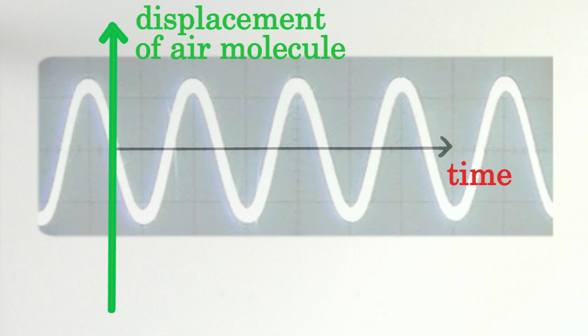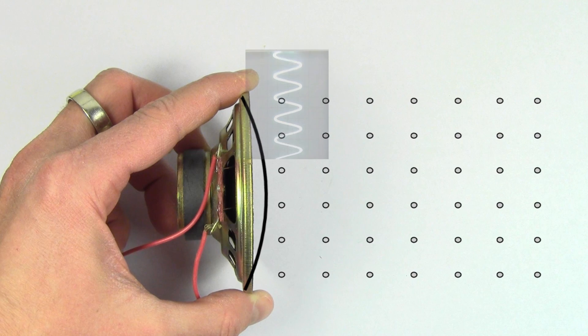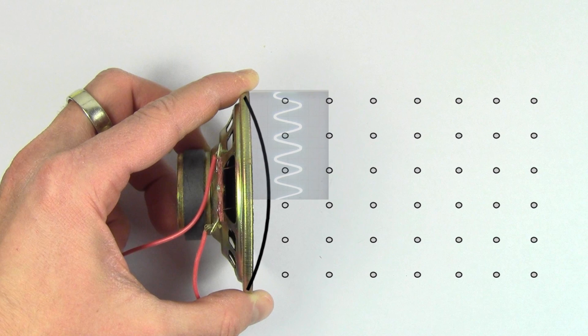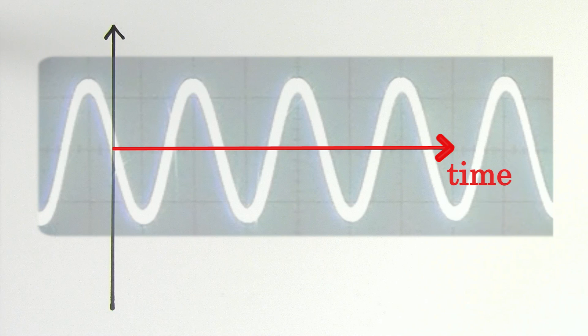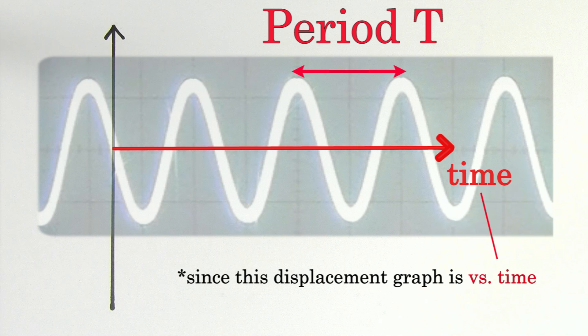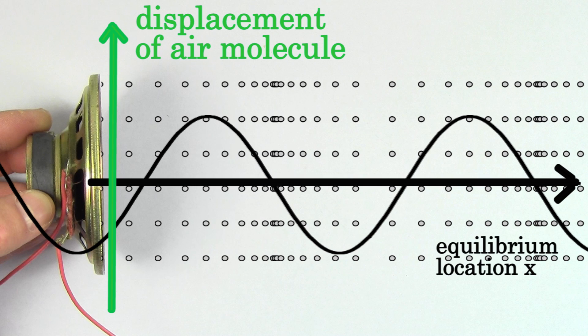So be careful, for a sound wave, a displacement versus time graph represents what that particular air molecule is doing as a function of time. And on this type of graph, the interval between peaks represents the period of the wave. But a displacement versus position graph represents a snapshot of the displacement of all the air molecules along that wave at a particular instant of time. And on this type of graph, the interval between peaks represents the wavelength.